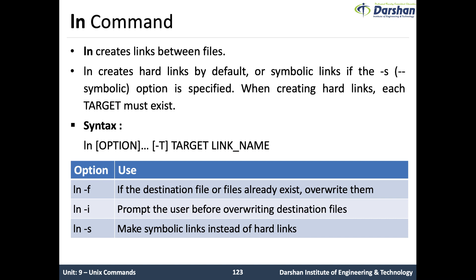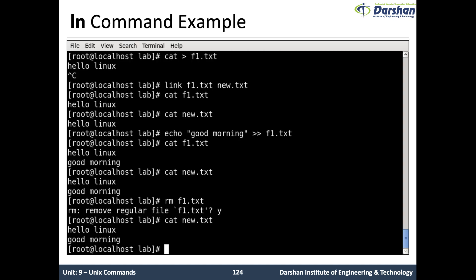Let us see an example. I am creating f1.txt using the cat command, with content 'hello Linux'. Then I am linking f1.txt to new.txt — new.txt does not exist but it gets created. Now f1 is linked to new.txt, and the content of new.txt is 'hello Linux' because we have linked f1 to new.